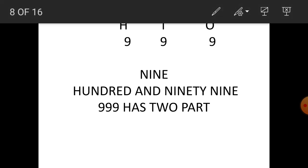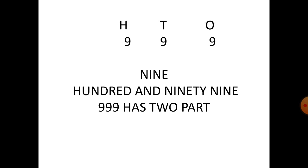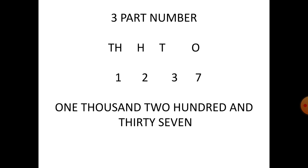In the next slide, we have four-digit numbers: ones, tens, hundreds, and thousands. For example, one thousand two hundred and thirty-seven — we divide it into three parts: one thousand, two hundred, and thirty-seven.